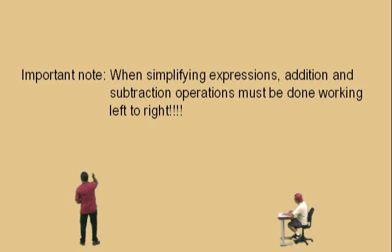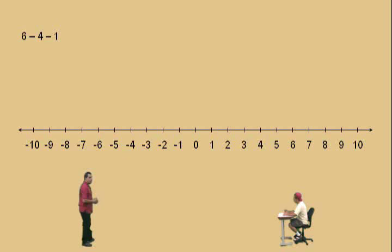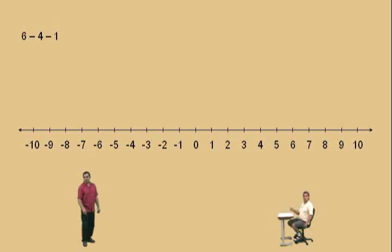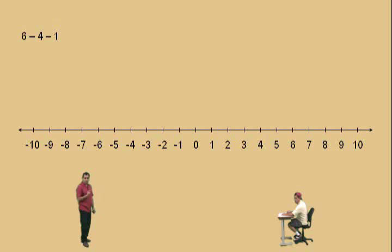Let's get our first example: six subtract four, subtract one. Now, Charlie, pay attention to this — a lot of students make this mistake. They just see that four subtract one is three and want to do that first. You can't do that first. Actually, you can do that first if you want to repeat this class! Order of operations says when you have additions or subtractions, you must work left to right, otherwise you won't get the correct answer.